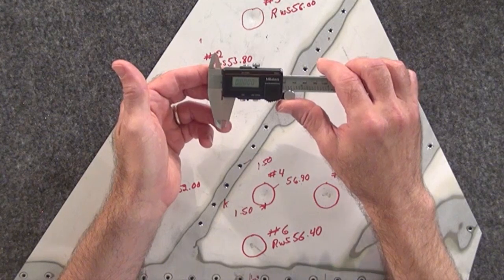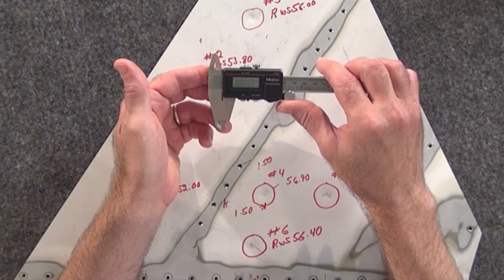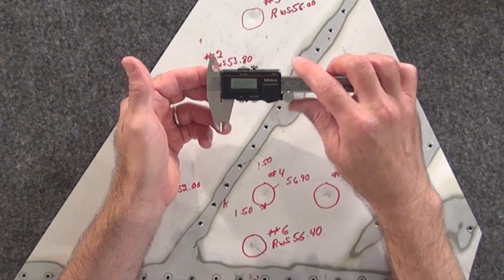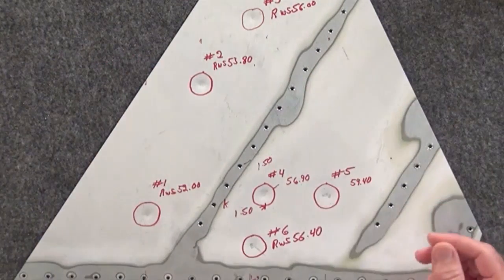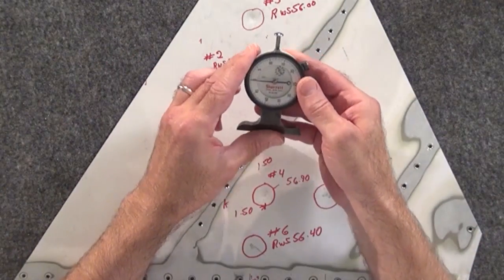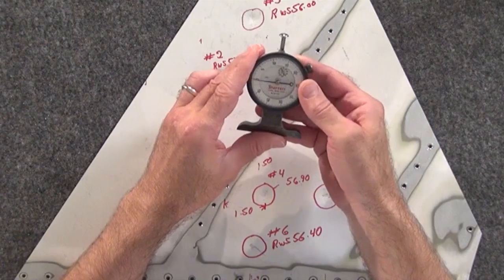And this is a Starrett depth gauge. And what we want to look at, try to distinguish the different functions here as well as, is there a better or best, and is there a preferred method?